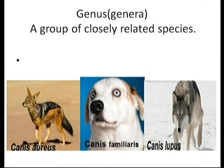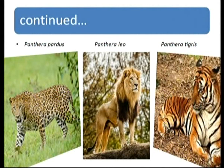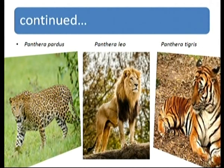Genus (plural: genera) is a group of closely related species. For example, Canis aureus (jackal), Canis familiaris (dog), and Canis lupus (grey wolf) are three different species, but because they are closely related, they are all placed in the same genus: Canis. Similarly, leopard (Panthera pardus), lion (Panthera leo), and tiger (Panthera tigris) belong to different species but the same genus Panthera. Species in one genus are more closely related to each other than to species in other genera.